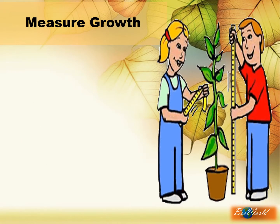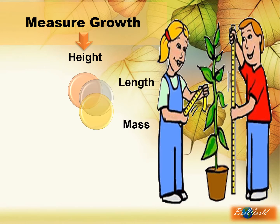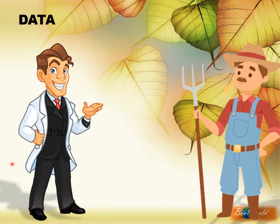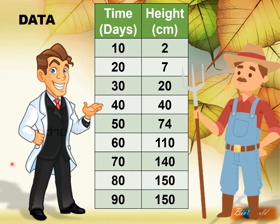To begin, we can start measuring changes in the organism as proof of growth. When we measure, we can use parameters such as height and mass. These two are the most popular parameters for measurement, but we can also measure length, volume, size, or even area. By measuring and recording all these values in a table, we will have sufficient data. Once we have the data and present it to the target audience, they will be very confused because the data is quite meaningless to them unless we are able to convert it into a graph.